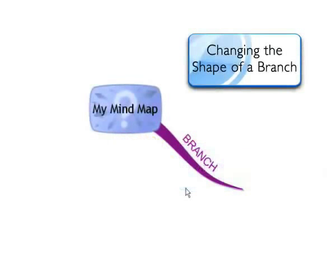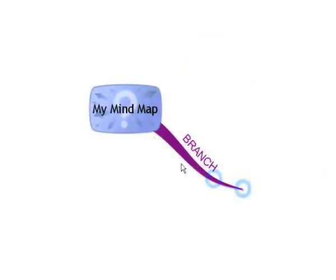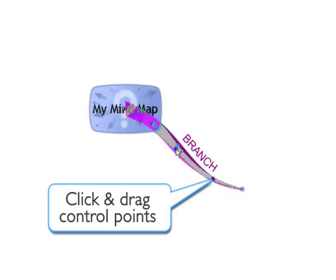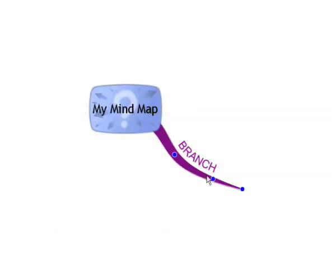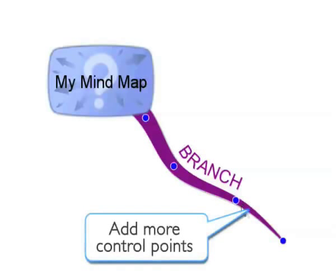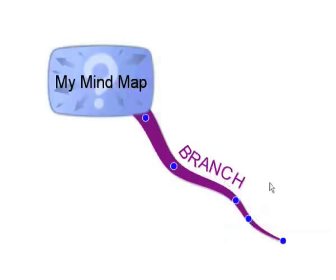To change the shape of your branch, you first must make sure the branch is active. Then click on one of the blue control points placed along the branch and drag. You will see the curve of the branch change in the direction of your mouse. You can add more control points by pressing Shift and clicking on the branch.